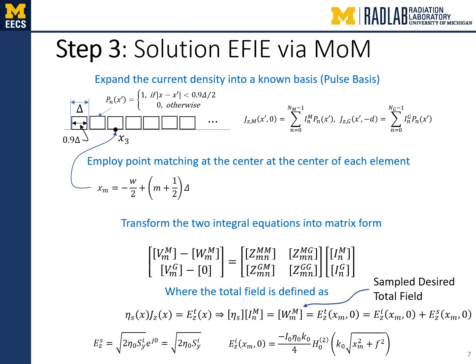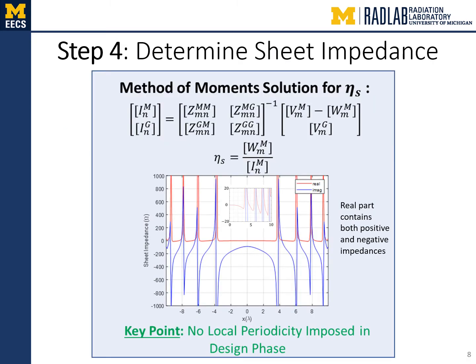The integral equations are discretized and cast in matrix form using the method of moments with pulse basis functions and point matching. A block matrix equation is formed with the total field appearing on the left-hand side as the matrix W. The matrix W is formed from point-matching samples of the desired total field formulated in step one. This matrix equation is solved for both the unknown current densities. Returning to the discretized version of the impedance boundary condition, we obtain the metasurface impedances by direct division of the desired total field and the induced current density on the metasurface layer.